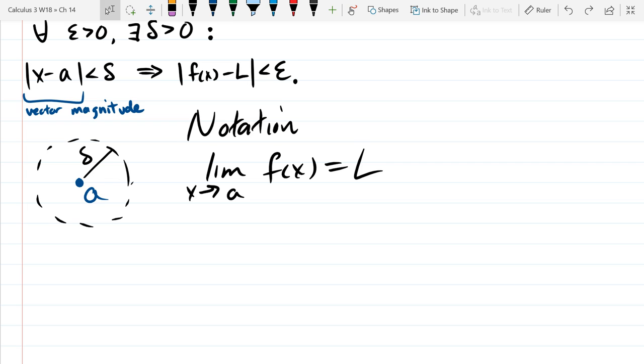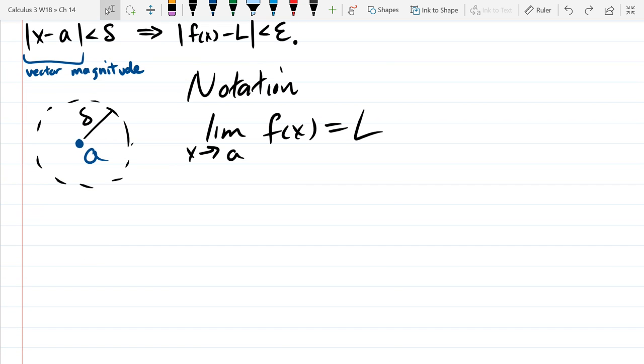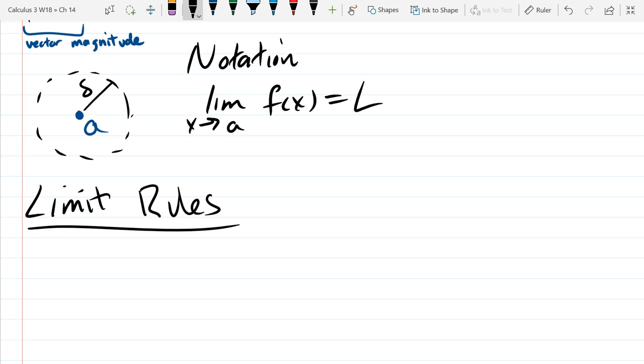So how do you show a limit exists? Do you remember doing that. You take any epsilon and you have to compute the delta for it. That's how you show a limit exists by the definition. So let's write down limit rules. These will be the same ones from calculus one.